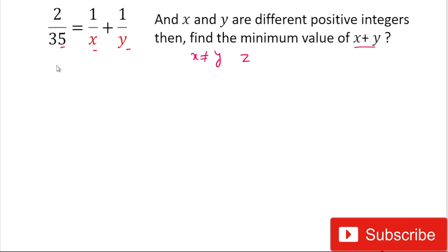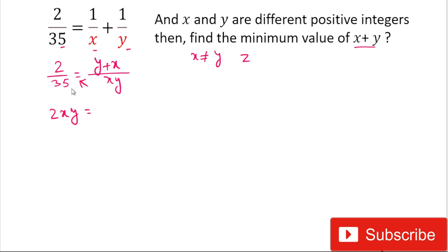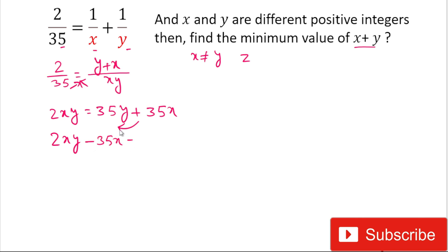To solve this problem, first we simplify the equation. We have 2/35 on the left, and on the right-hand side we take the LCM of x and y, giving (y + x)/(xy). Cross-multiplying gives 2xy = 35y + 35x. Rearranging, we get 2xy - 35x - 35y = 0.